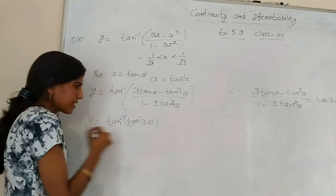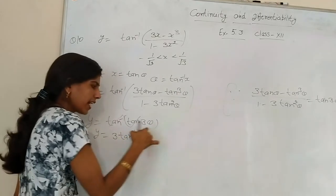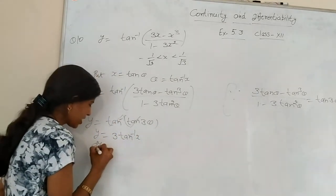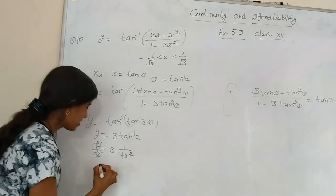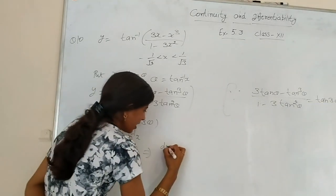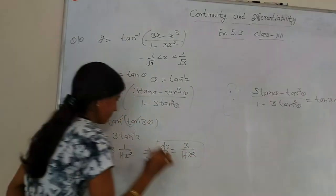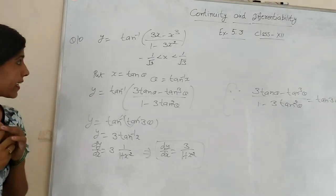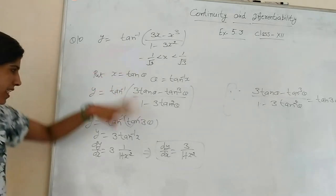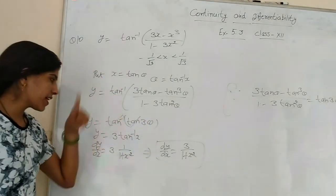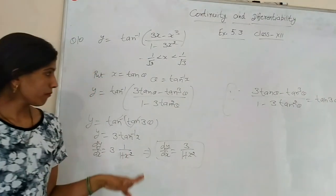So in place of the expression we put tan 3θ. Then y = tan⁻¹(tan 3θ), and tan and tan⁻¹ cancel, giving y = 3θ = 3 tan⁻¹x. The derivative of tan⁻¹x is 1/(1+x²), so dy/dx = 3 × 1/(1+x²) = 3/(1+x²). This is our answer.